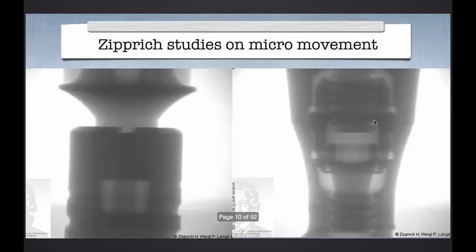On the left-hand side, we have a very platform-switched implant that has a conical connection. When chewing laterally on this implant, there's really little micro movement at all. On the right-hand side, we have an old-school implant that has a lot of space underneath it and sort of an external bevel — that one had quite a bit of space.